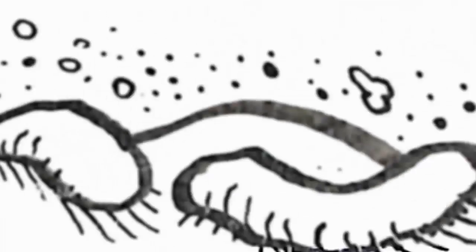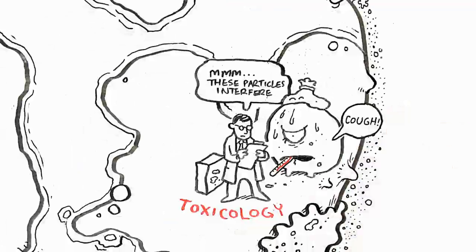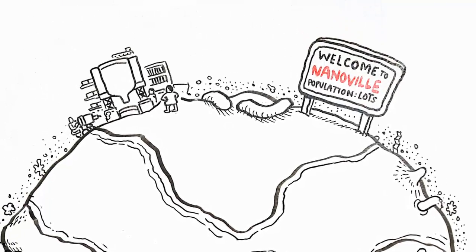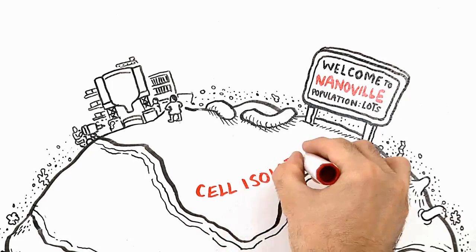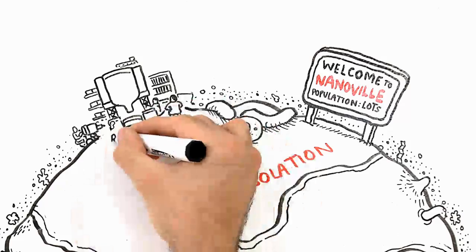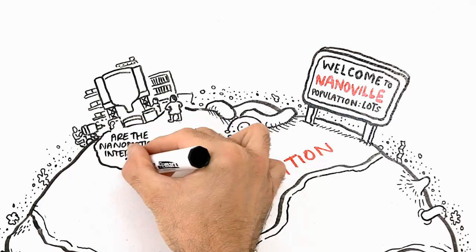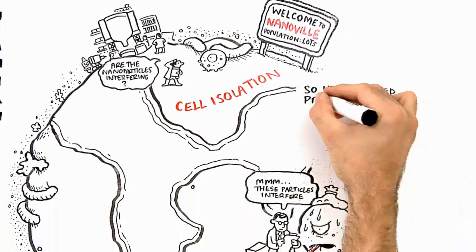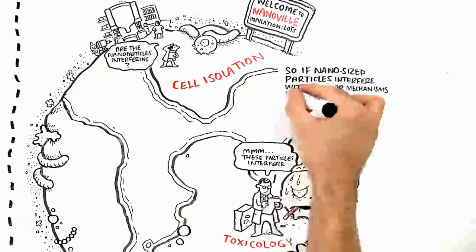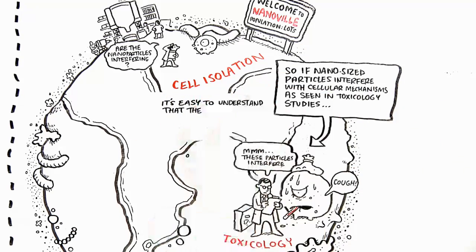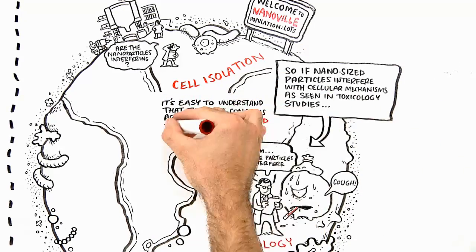So while toxicologists live on the nanosize planet, they're in a different discipline than scientists doing all the cell isolation, which is like living on a different continent. But because the scientists doing cell isolation are in a different discipline and so remote, they keep using the nanosize particle without being fully aware of what is happening on the toxicology continent. So if nanosize particles interfere with cellular mechanisms as seen in toxicology studies, then it's easy to understand that the same concerns also apply to cells isolated with nanoparticles.